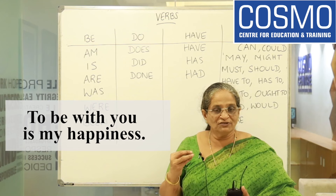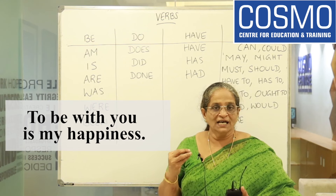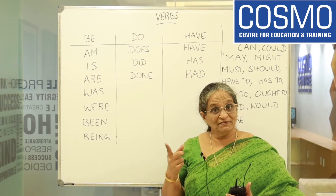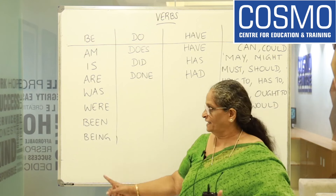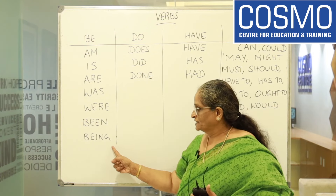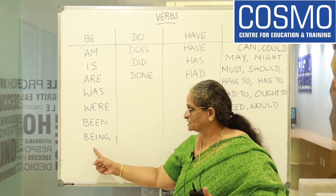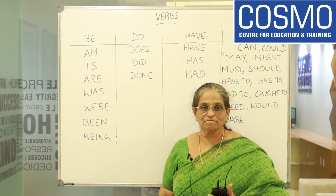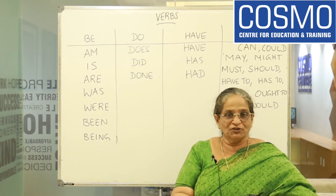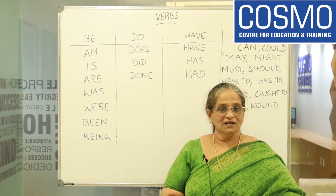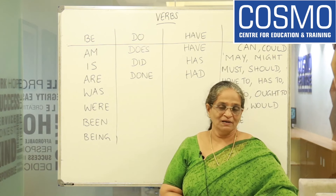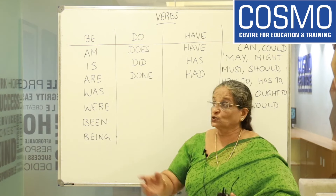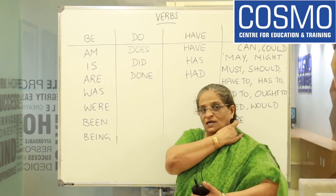And the present participle form is BEING. 'Being with you is my happiness.' Both sentences are right — 'To be with you is my happiness' and 'Being with you is my happiness.' Can you understand? So BE and BEING are the base and present participle forms.